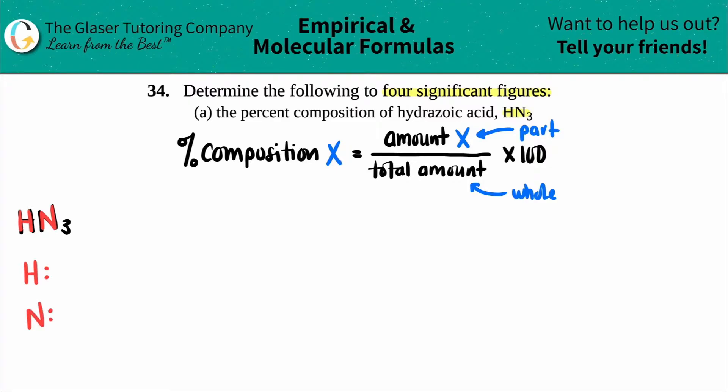Now write down how many of each element you have in your compound. For hydrogen, I don't see a number here, so there's a secret one. There's one hydrogen. And then I see this three. This belongs to the nitrogen. So I have one hydrogen and three nitrogens.